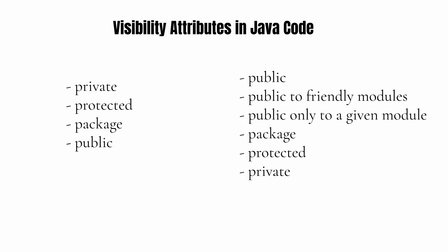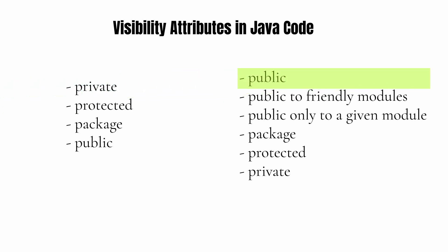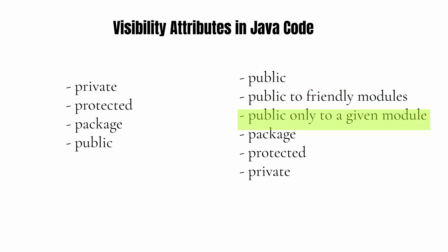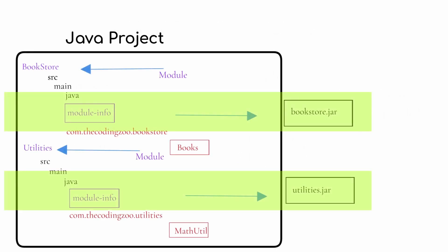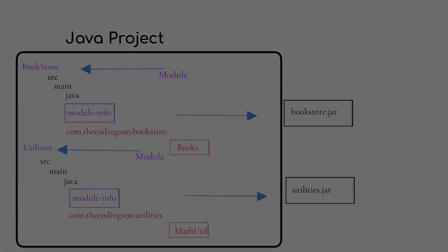So what's changed? Let's summarize. We went from having public, protected, package scope, and private — to now having public to everyone, public to friendly modules only, public to a given module, package, protected, and private. So we have two more types of visibility attributes by defining a module definition. The other change is that with a module definition, I can now explicitly say all the code in this set of packages in this module has to be in the same jar.